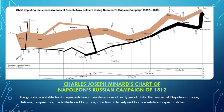There are temperatures shown at the bottom — you can see negative 11 degrees marked. Latitude and longitude are shown, as well as the direction of travel: they were heading toward Russia and then heading back. The direction and location are shown relative to specific dates, and different cities are marked. So there's all kinds of information packed into this one two-dimensional graph.